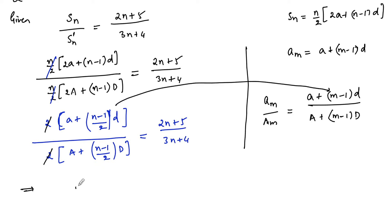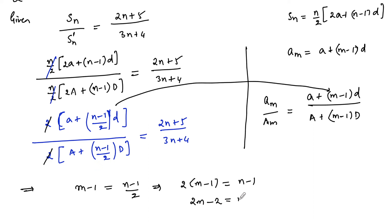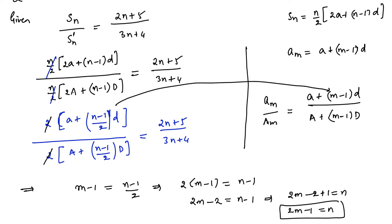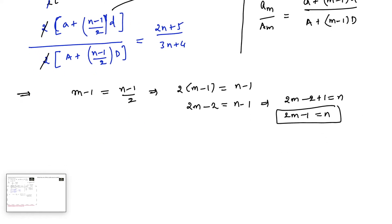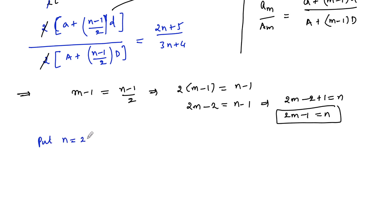When comparing, m minus 1 must be equal to n minus 1 upon 2. So that gives 2 times m minus 1 equals n minus 1, or 2m minus 2 equals n minus 1, which we can write as 2m minus 2 plus 1 equals n. Therefore 2m minus 1 equals n. To get the mth terms ratio, we substitute n as 2m minus 1.